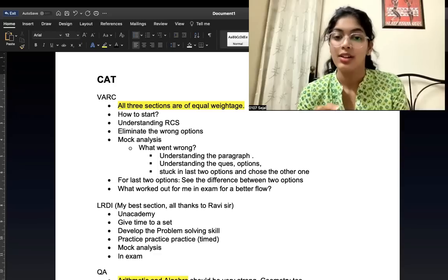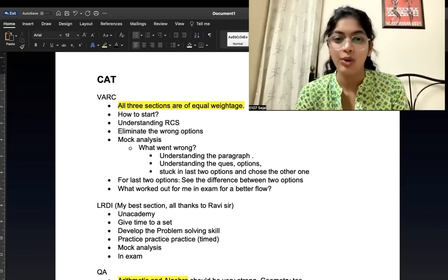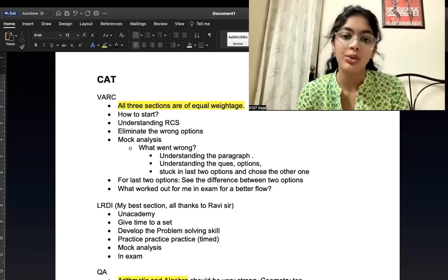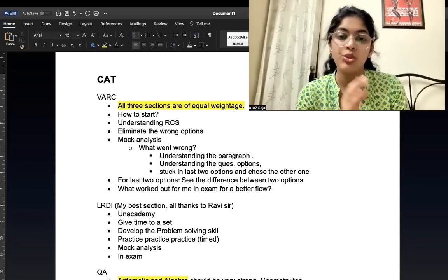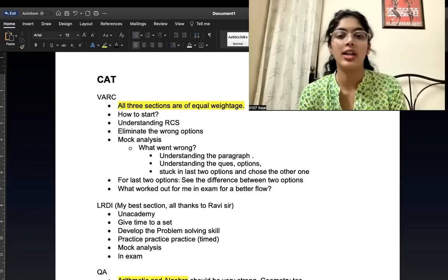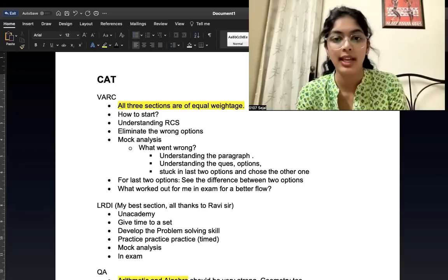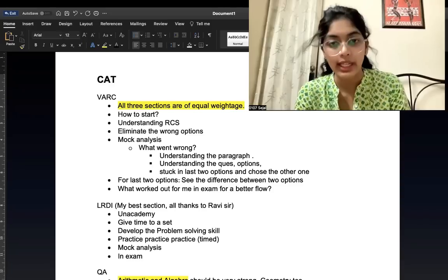How to start? Take it slow. Do one or two RCs daily and then gradually you could increase the number to three to four RCs. You should read daily at least for 20 minutes, anything, article, newspaper, anything. It would just help to increase your reading capacity.